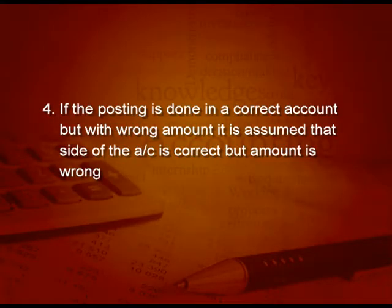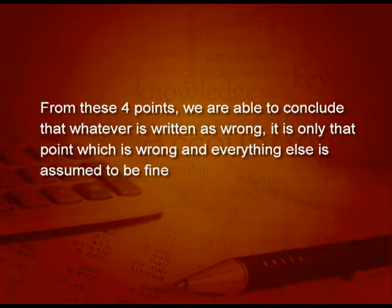Next point: if the posting is done in a correct account but with the wrong amount, it is assumed that the side of the account is correct but only the amount is wrong. So, from the above four points, we are able to conclude that whatever is written as wrong, it is only that point which is wrong and everything else is assumed to be fine.